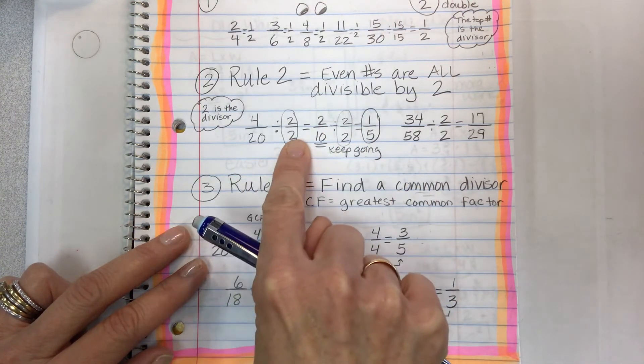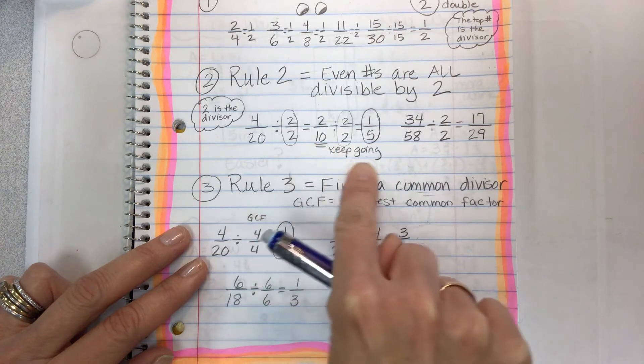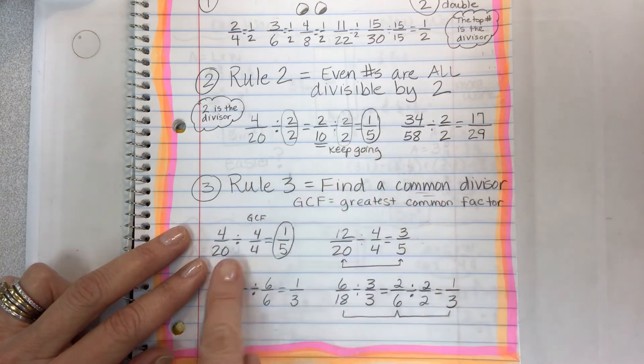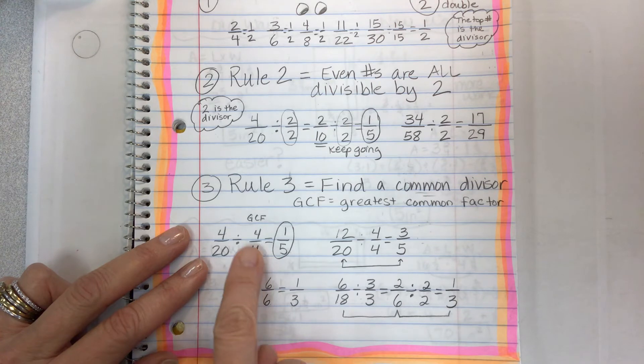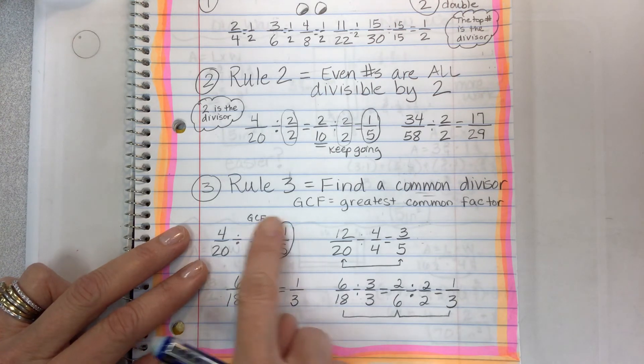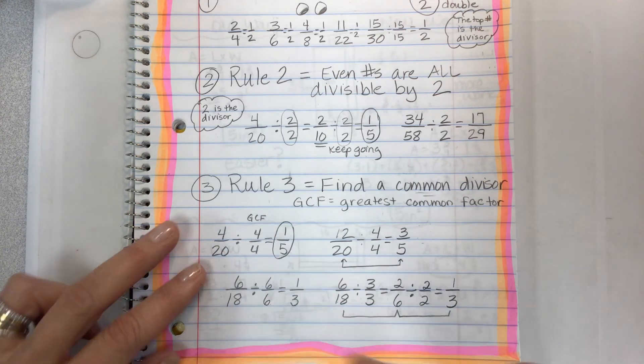From here to here to here, that takes a little bit of work. But if you find out or recognize that there's a bigger number, you can simplify in one step. Here's another one. They're both even.